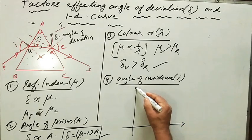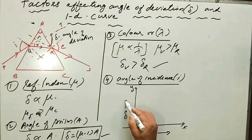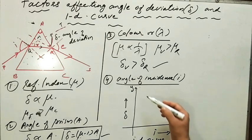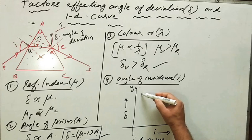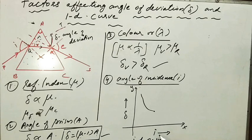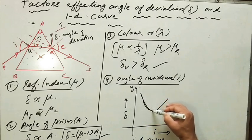In the ID curve, the angle of incidence is taken on the x-axis and delta is taken on the y-axis. This is the ID curve or i-delta curve — very important for the board examination. As per our observation, as the angle of incidence increases, the angle of deviation decreases. It reaches a minimum value, and beyond that particular angle of incidence, if we increase the angle of incidence further, the angle of deviation increases.